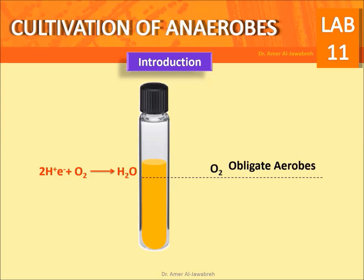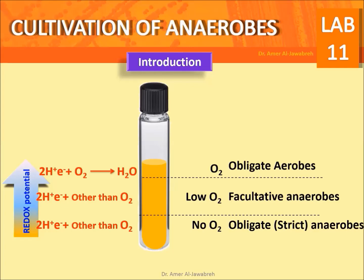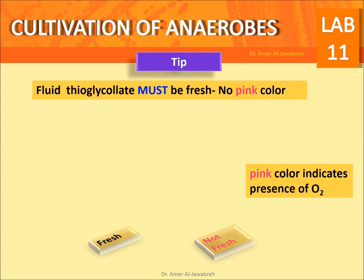In FTM agar: oxygen predominates on the surface, making it the sole electron acceptor for obligate aerobes, but oxygen is totally absent in the deep butt, where it is replaced by other electron acceptors for obligate anaerobes. However, oxygen in between is low and shared by other electron acceptors, supporting facultative anaerobes.